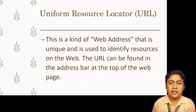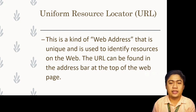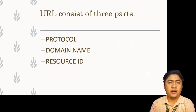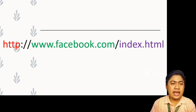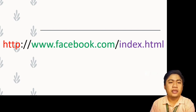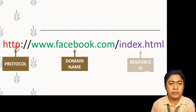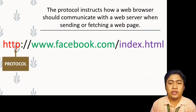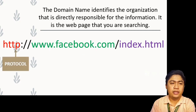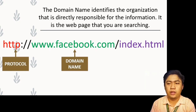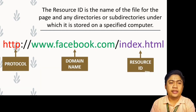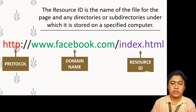The URL, or Uniform Resource Locator, is a unique web address used to identify resources on the web, found in the address bar at the top of a web page. A URL consists of three parts: the protocol, the domain name, and the resource ID. The protocol instructs how a web browser should communicate with a web server. The domain name identifies the organization responsible for the information. The resource ID is the name of the file and any directories or subdirectories under which it is stored.